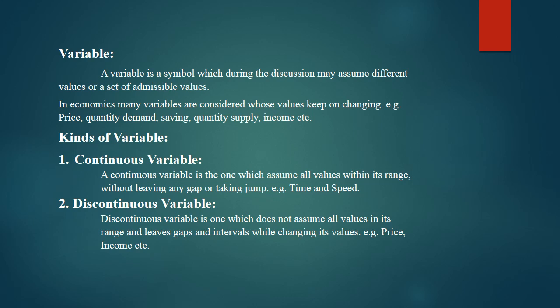Like time, temperature, speed — these are all values that change, sometimes increasing and decreasing. So these are all quantities which are called variables. There are some kinds of variables, and three kinds are included in your syllabus. The first one is the continuous variable.